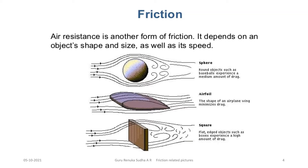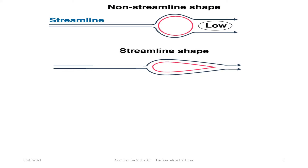Observe different shaped objects: a spherical shape, an aerofoil shape like the wings of an aeroplane, and a square slab. By observing the direction of the air flow arrows, we see that the shape and size of an object affect friction. With the aerofoil shape, the friction between the object and air is minimized — less friction is present. This is why aeroplane wings have that shape.